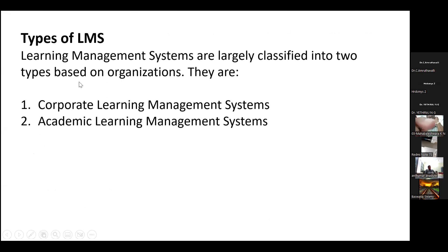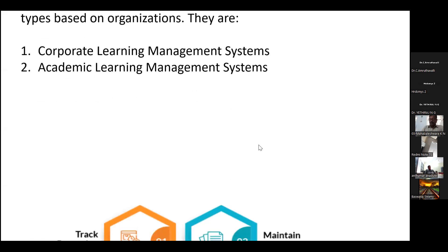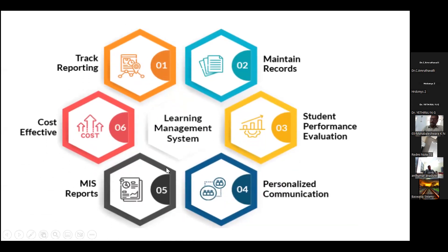Coming to the main categories of LMS: nearly 10 to 15 years back, the LMS was developed mainly for the corporate learning management system. Slowly, in the past five or six years, it has transitioned into an academic learning management system. These are the two broad classifications. The tracking and reporting module should be very powerful at both higher education and school levels. All records must be maintained in the LMS itself, and student performance evaluation must also be done in the LMS platform.